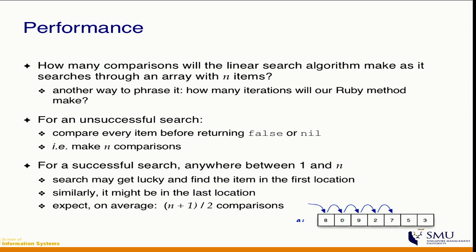The worst case for an array like this is when you look at all the possible places and still don't find what you're looking for. You've looked at all possible places, which means for an array of size n, you need to look at n spots before you realize the element isn't there. In that case, the complexity is O(n). In the best case, you find it in the first place you look — that's O(1) — but that's not likely to happen because you might be searching for different elements.